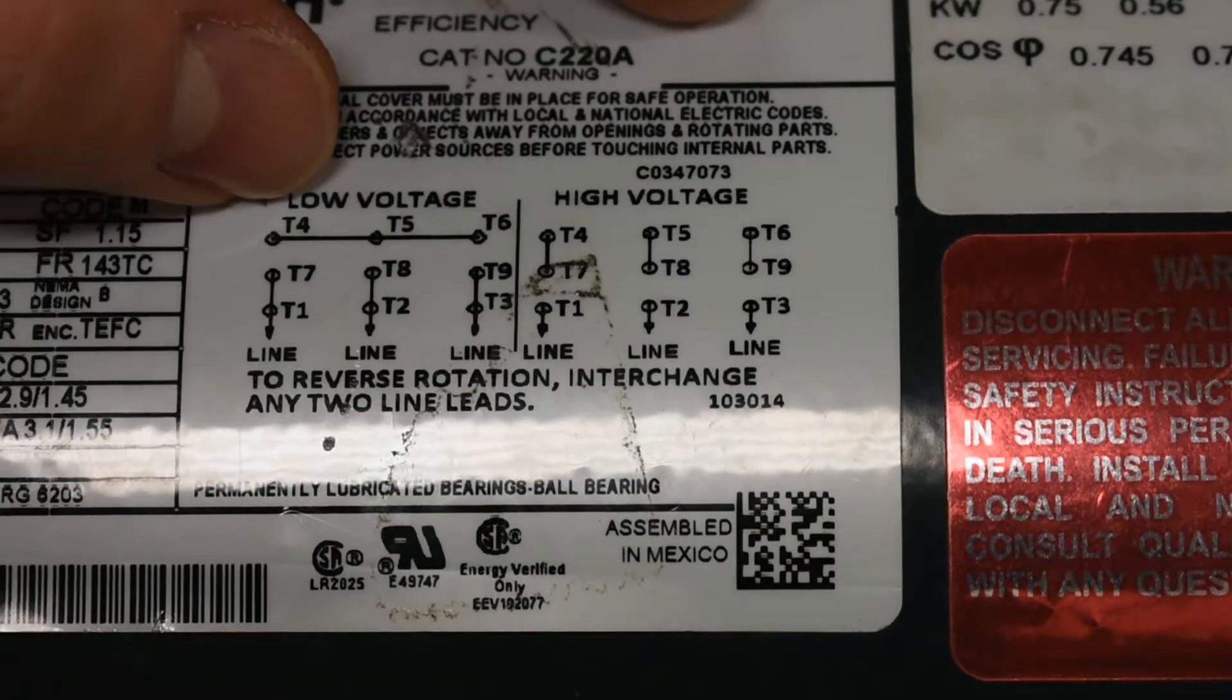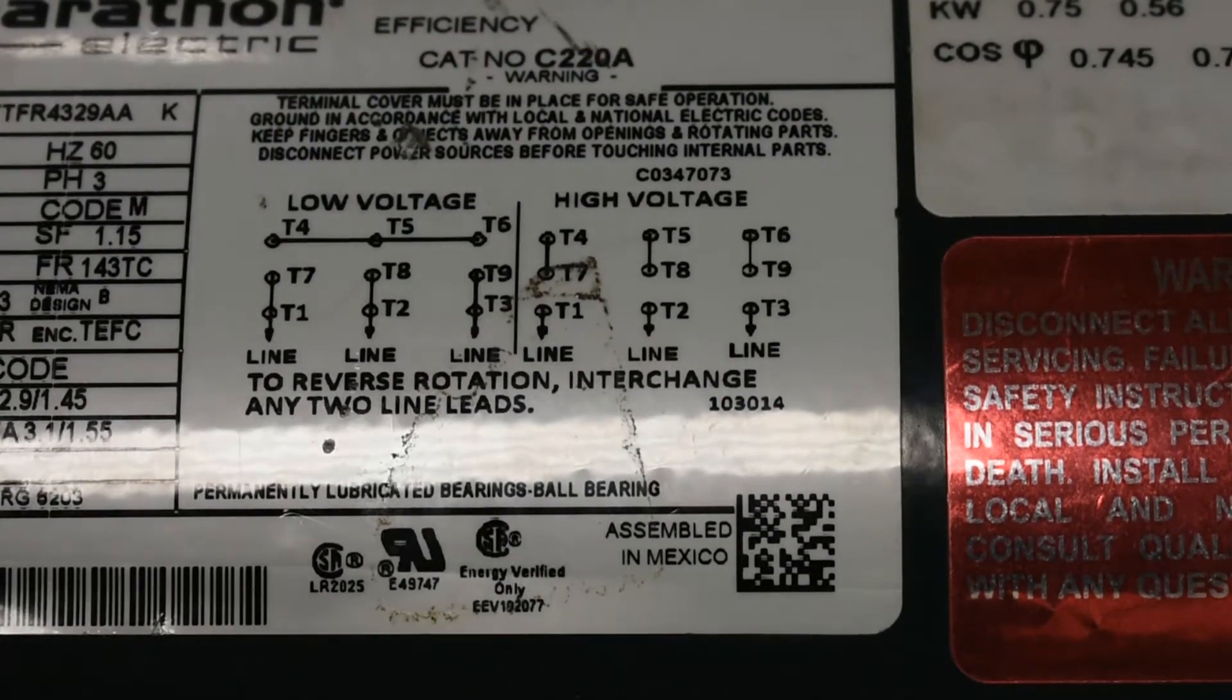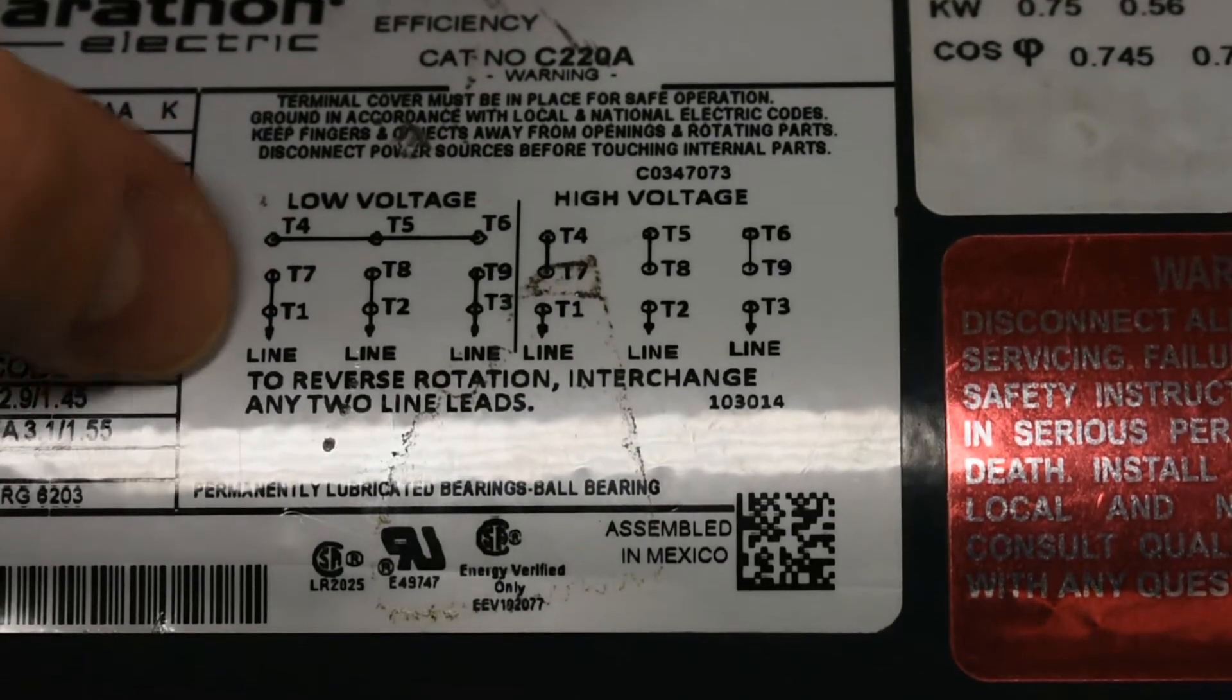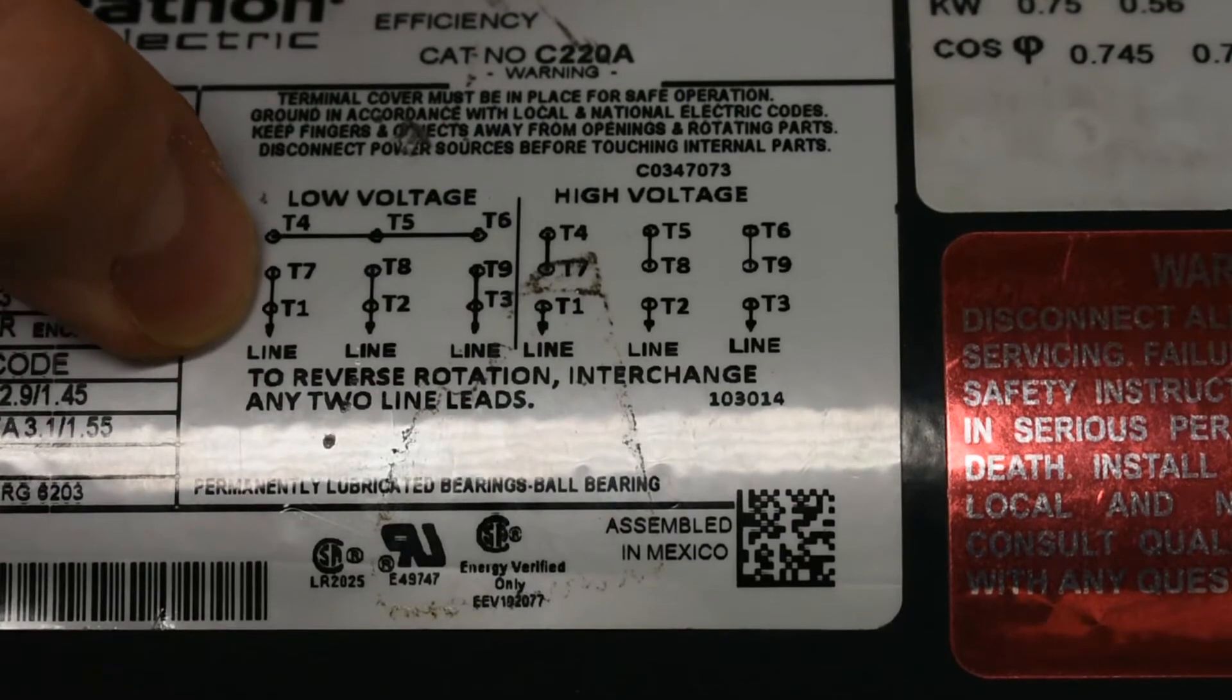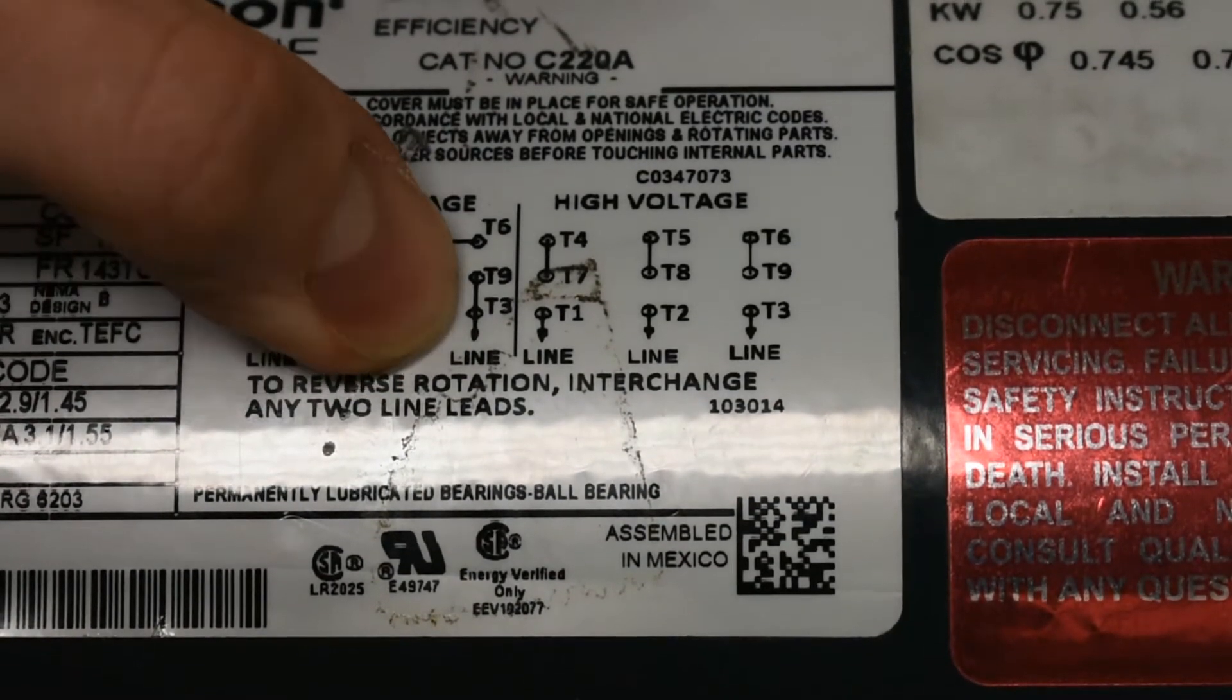Now for low voltage, we're going to connect T4, 5, and 6 together. That's using a wire nut of those nine wires coming out. And then we're also going to use a wire nut that connects a line to T1 and 7, another line to T2 and 8, and a third line to T3 and 9.